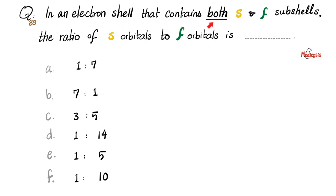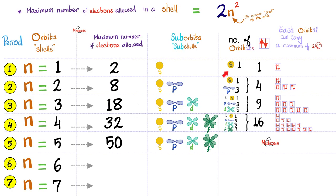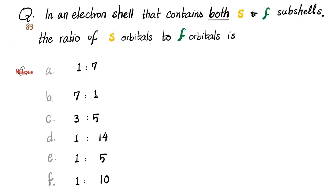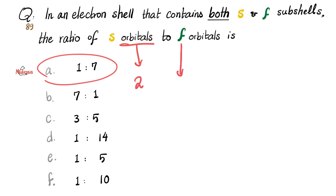In an electron shell that contains both S and F sub-shells, the ratio of S orbitals to F orbitals is what? The S sub-shell contains 1 orbital; the F sub-shell has 7 orbitals. So the ratio of S to F is 1 to 7. If the question asks about the ratio of S electrons to F electrons, S has 1 orbital carrying 2 electrons, and F has 7 orbitals × 2 = 14 electrons — the ratio is still 1 to 7.